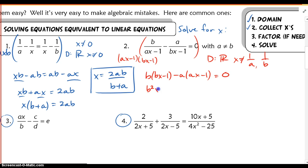When I distribute here, I'm left with b squared x minus b minus a squared x plus a, equaling 0. And again, I'm going to follow our next step here, which is going to be to collect your x's. Okay, so if I collect my x's, that means b squared x and a squared x are going to stay put. And I will add the b and subtract the a over to the other side.